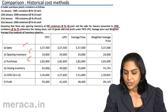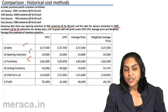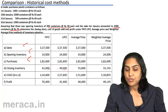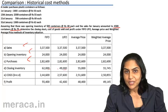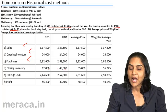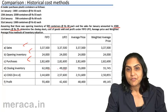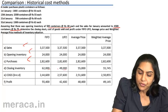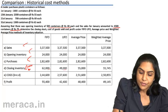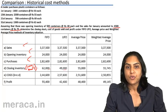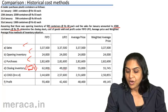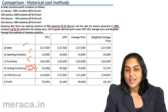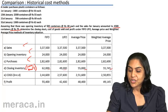Under FIFO it was 62000. Under the average price method it was 55000, which was a simple average of all the prices. There were five prices in total, therefore we summed up the prices, divided by five and arrived at Rs.55. Mind you, in all these cases the number of units involved continues to be 1000. We are talking of the value of 1000 units of inventory: 62000 under FIFO, 49000 under LIFO, 55000 under the average price method, and under the weighted average price it was 55745.